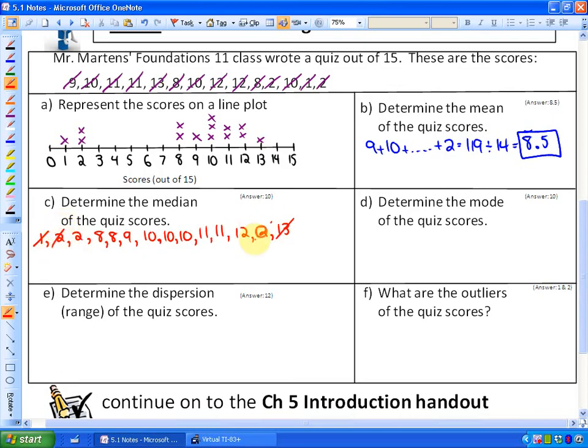I tend to go from the ends and start knocking off to find the middle. Knock off one on the ends, two on the ends, three, four, five, six on either end. You'll notice there are two middle values. If they were different numbers, like 8 and 10, you'd take the average. But in this case, the average of 10 and 10 is 10. So the median is 10.